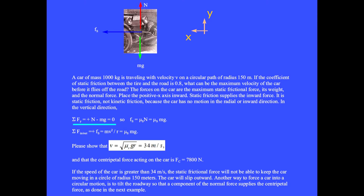In the vertical direction, the sum of the y-components of forces equals plus N minus Mg equals 0, so the static frictional force equals μₛ times Mg. The sum of the inward forces equals static friction equals Mv² over R equals μₛMg. Please show that the velocity equals 34 meters per second and that the centripetal force acting on the car is 7,800 newtons. If the speed of the car is greater than 34 meters per second, the static frictional force will not be able to keep the car moving in a circle of radius 150 meters, and the car will slip outward.